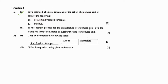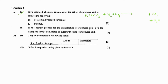Give balanced chemical equations for the action of sulfuric acid on the following. The first one is potassium hydrogen carbonate, also known as potassium bicarbonate, KHCO3. Whenever a dilute acid is added to a bicarbonate, the products will be carbon dioxide, water, and a salt. In this case, the salt formed will be potassium sulfate.